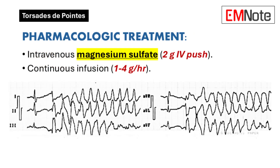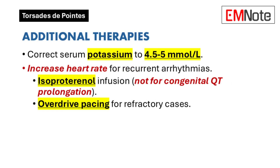Intravenous magnesium sulfate is the first-line pharmacologic treatment. The initial dose is 2 grams administered slowly, followed by a continuous infusion to maintain magnesium levels above 2 millimoles per liter. Additional measures include correcting hypokalemia to maintain serum potassium levels between 4.5 and 5 millimoles per liter and increasing the heart rate in cases of recurrent arrhythmias. Isoproterenol infusion may be considered unless contraindicated, and overdrive pacing can be utilized for refractory or recurrent episodes.